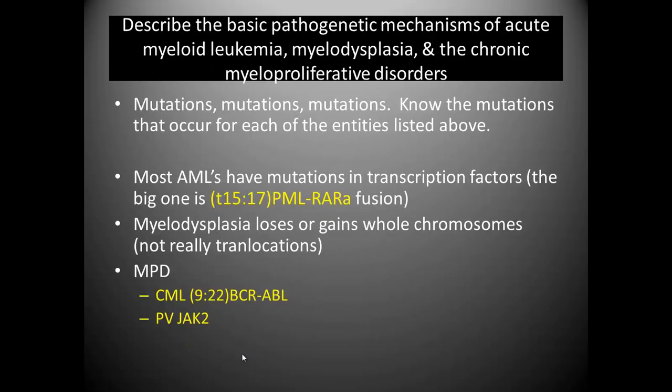When we talk about the basic pathogenic mechanisms of AML, myelodysplasia, and chronic myeloproliferative disorders, basically what this comes down to is mutations. All of these things are essentially driven by mutations — just like the lymphomas we talked about earlier, where some kind of fusion or deletion occurs, something gets dysregulated in the cell cycle, and then the cells take off. Some really common examples are the t(15;17) or the PML-RARα fusion. That's the one you see in AML almost all the time on a test question, and it's treatable with ATRA, which is very responsive — which is why we ask you about it.